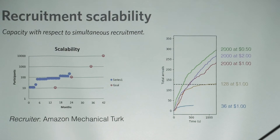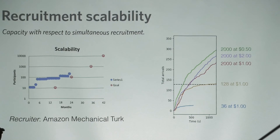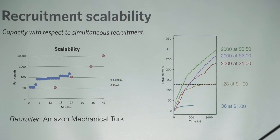Each curve is the cumulative number of people that have arrived in that test. We're recruiting 36 people and the payment is $1. You can see we get up to 36 in a reasonable amount of time — it happens more quickly at first and then slows down. 128 similarly — recruitment is quite fast at the beginning but then slows. This is a cumulative number, so people who left are not indicated here.